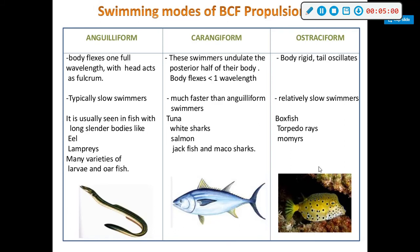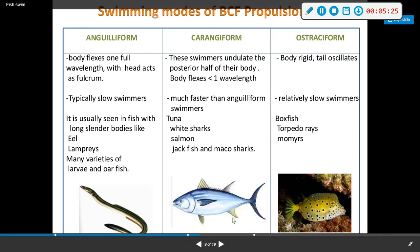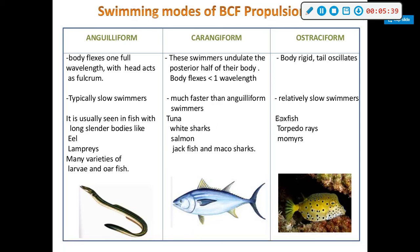Carangiform swimmers undulate the posterior half of their body, so their body flexes less than one wavelength. These are much faster swimmers than anguilliforms. They include tuna, white sharks, salmon, jackfish, and mako sharks — they only flex their tail at the rear, which creates a much more efficient movement so they can go much faster for much longer.